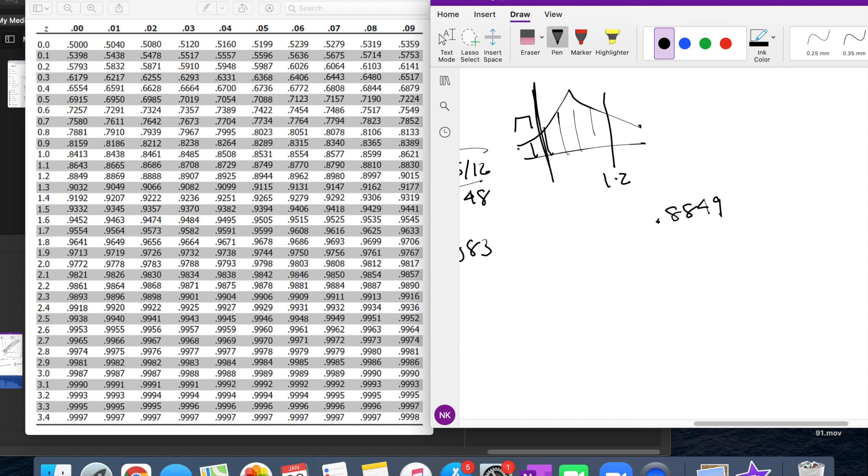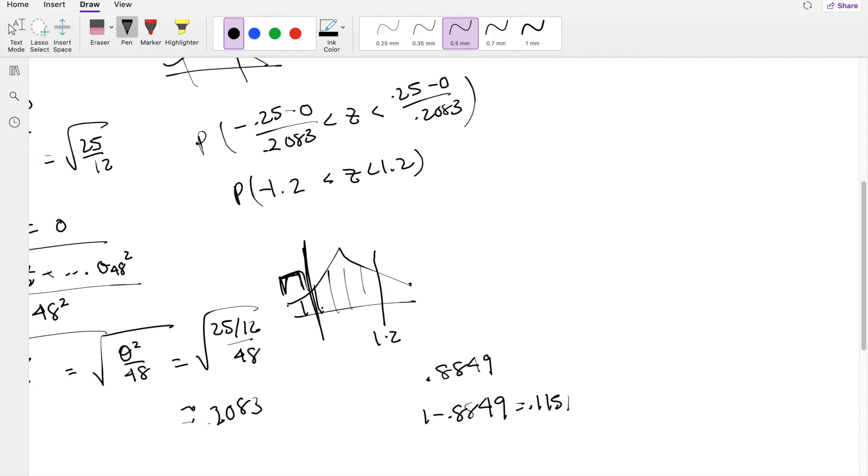So that means this little tidbit right here must be 1 minus 0.8849, which is equal to 0.1151. And if we're trying to find this range here, again, it's the same idea. You take the 0.8849 minus this little tidbit right here to get the range that you want.